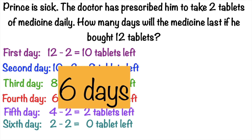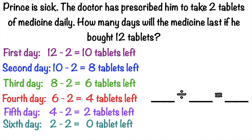So now, children, let's write the division equation for this problem. The first number is the dividend. What is the dividend here? That's correct! It's 12 because we have 12 tablets in all. How about the divisor? What is the number that we divide to our dividend? Good job! It's 2 because friends need to take 2 medicines daily. And what is the quotient? Good job! It's 6.